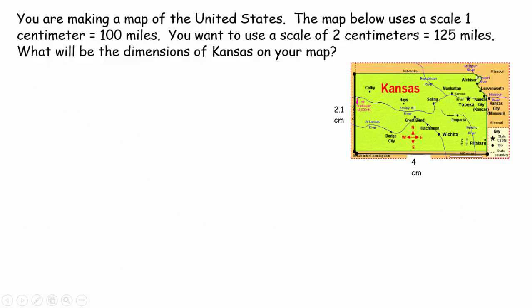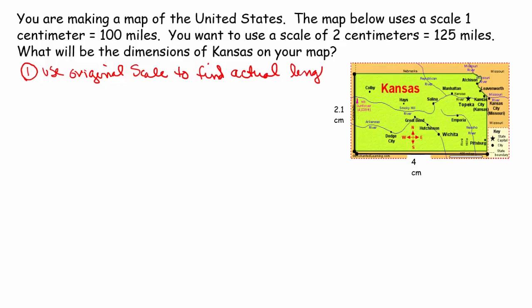If you're making a map of the United States, the map below uses a scale of 1 centimeter equals 100 miles. You want to use a scale of 2 centimeters equals 125 miles. What will be the dimensions of Kansas on the new map? Asking for the dimensions just means asking for the length and the width. Step 1: always use the original scale to find the actual length and width, the actual dimensions, and then we'll go from there using the new scale.